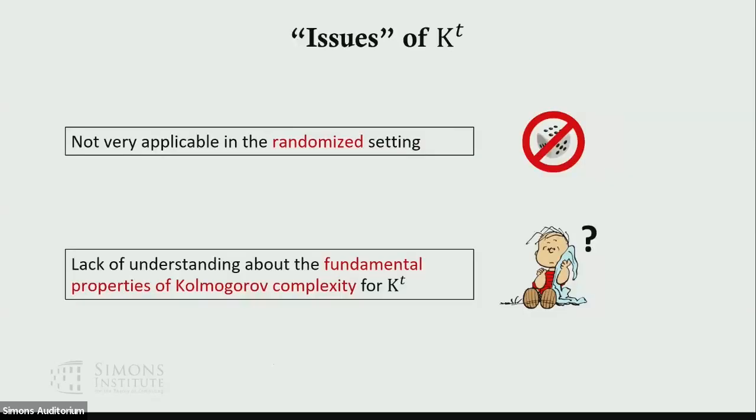Time-bounded Kolmogorov complexity is very useful, but there seem to be some issues when we use kt as the notion of time-bounded Kolmogorov complexity in certain contexts. One is that kt doesn't seem to be very applicable in the randomized setting. The second is that we don't have a good understanding of the fundamental properties of Kolmogorov complexity for kt.